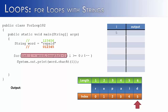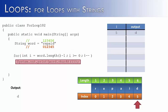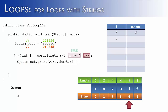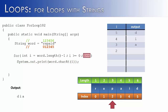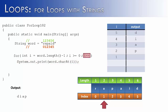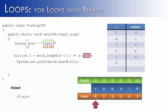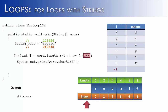Tracing the backwards loop: start at length minus 1, which is 5. Condition true, print 'd'. Decrement to 4, true, print 'i'. Decrement to 3, true, print 'a'. Decrement to 2, 2 >= 0, print 'p'. Decrement to 1, true, print 'e'. Decrement to 0, 0 >= 0, print 'r'. Decrement to -1; negative 1 is not >= 0, so the loop ends. We've printed 'repaid' backwards — which spells 'diaper'.